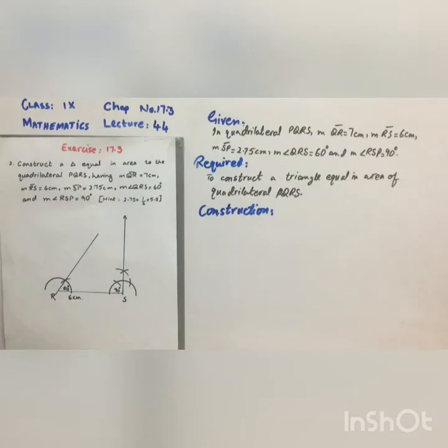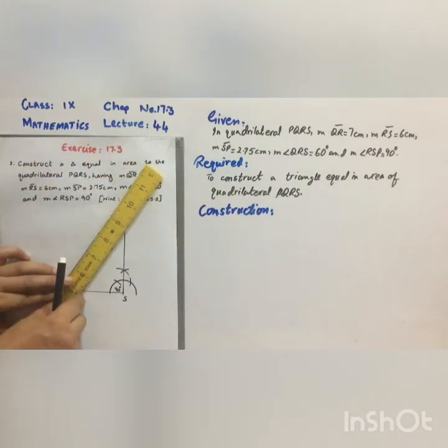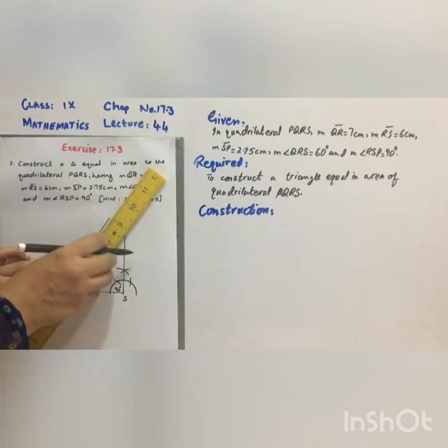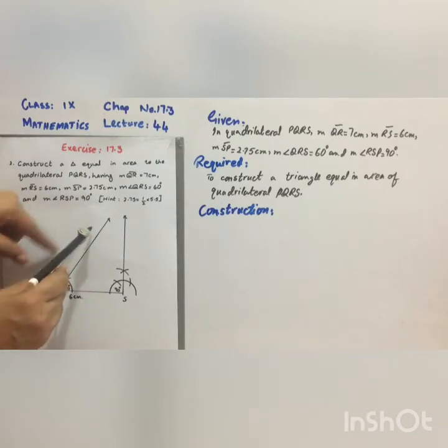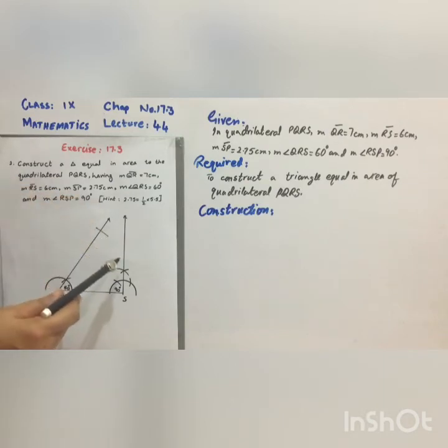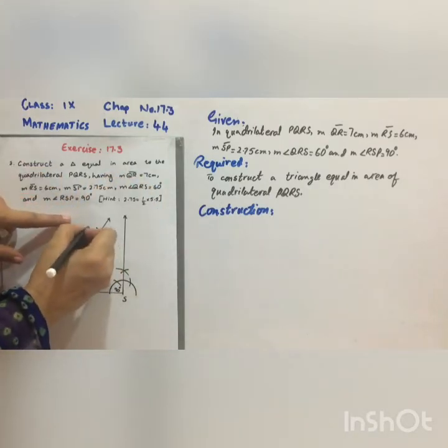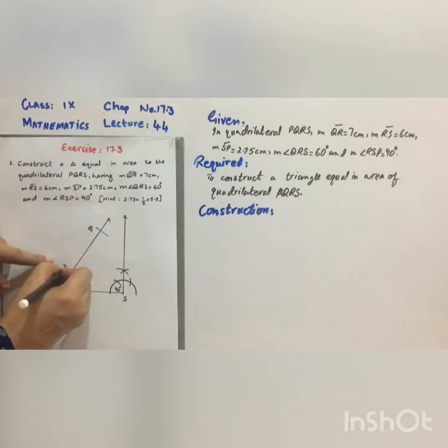Now the measurement of QR is 7 cm. So adjust the compass for 7 cm, and with center R and radius 7 cm, mark an arc with center R and radius 7 cm. Mark an arc to cut the arm of angle R at point Q. It is 7 cm long.